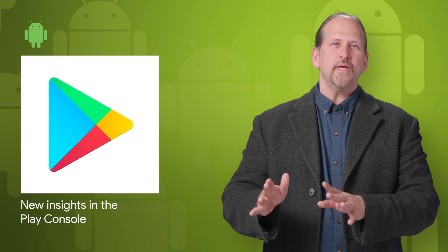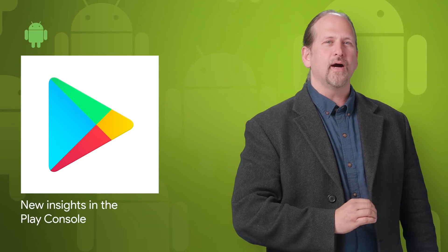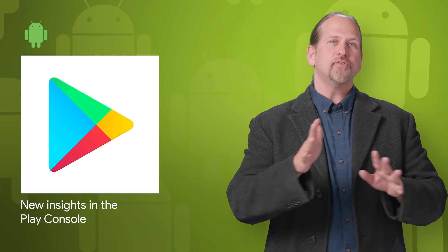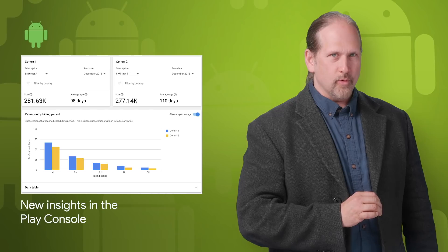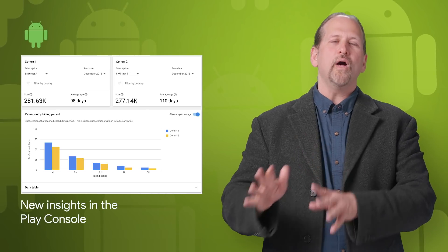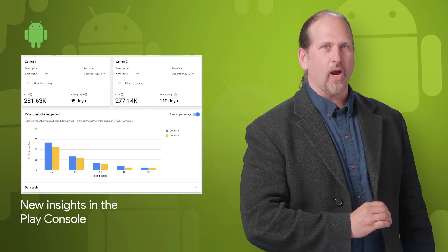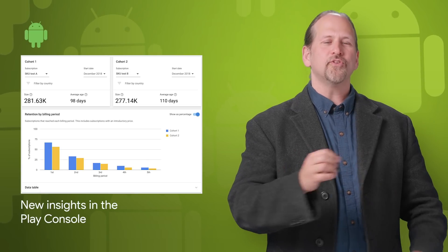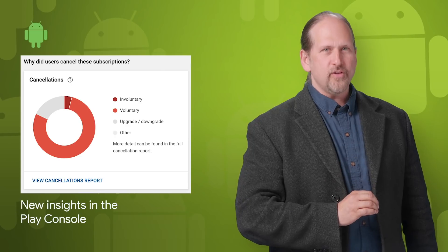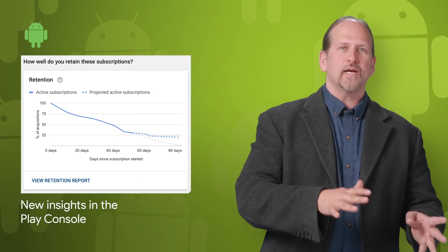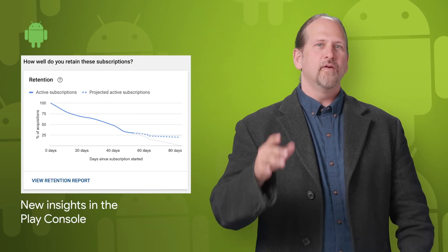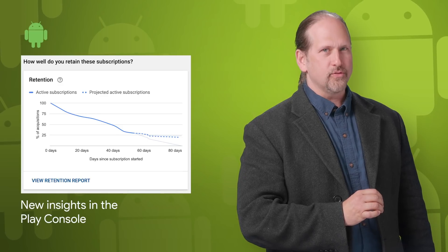We're rolling out new insights available directly in the Play console to help you optimize both subscriber conversion and retention. The updated subscription retention report shows how well you are retaining subscribers along with how well subscribers convert from free trial, introductory price, and first to second payment. We have also updated the subscription cancellations report to give more insight into voluntary and involuntary cancellations. For more details, head over to the post.